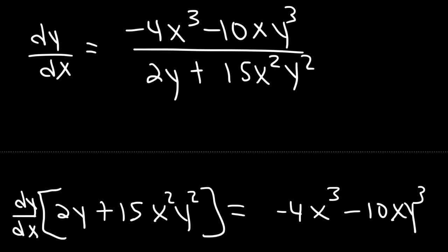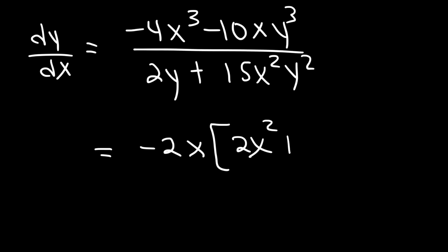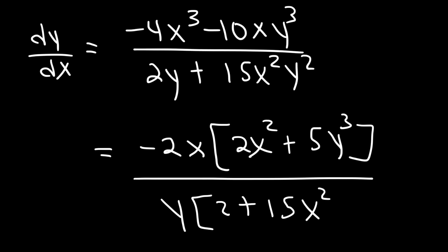We could leave the answer like that, but if you want to simplify, you could factor out a negative 2x in the numerator, giving you 2x squared plus 5y cubed on top, and you could take out a y on the bottom, leaving behind 2 plus 15x squared y. You could write your answer like that if you want, but it's not necessary. That's it for this example.